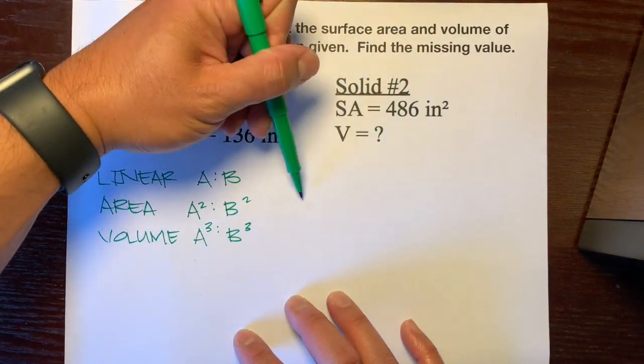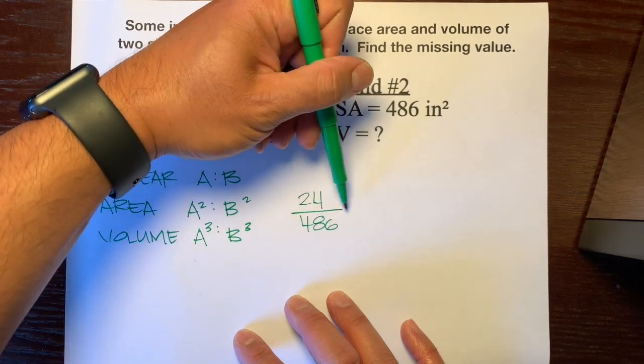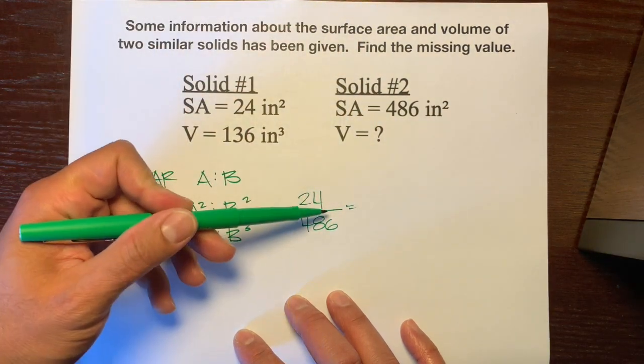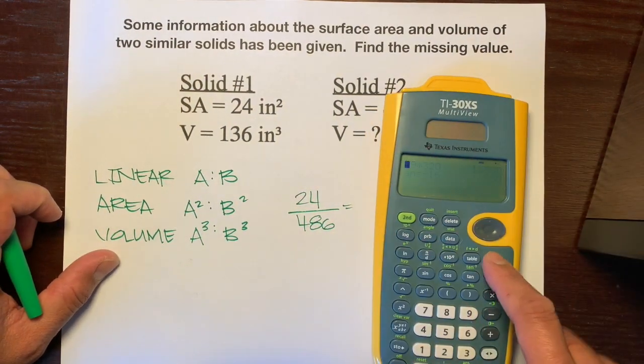So, we're going to write 24 over 486. And the next step is to simplify this ratio as much as possible.